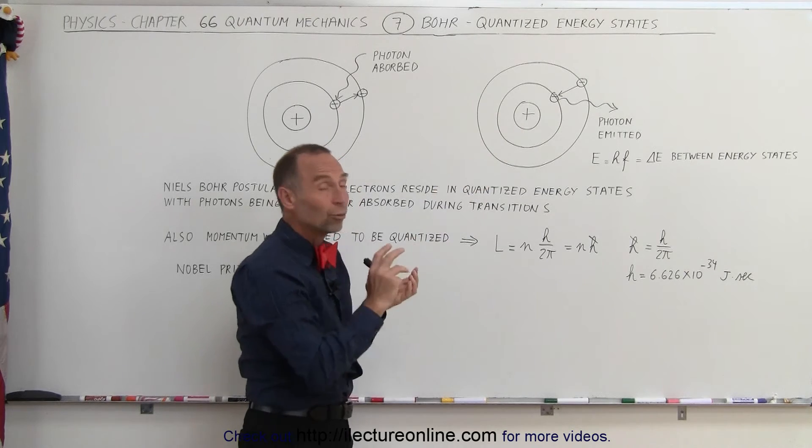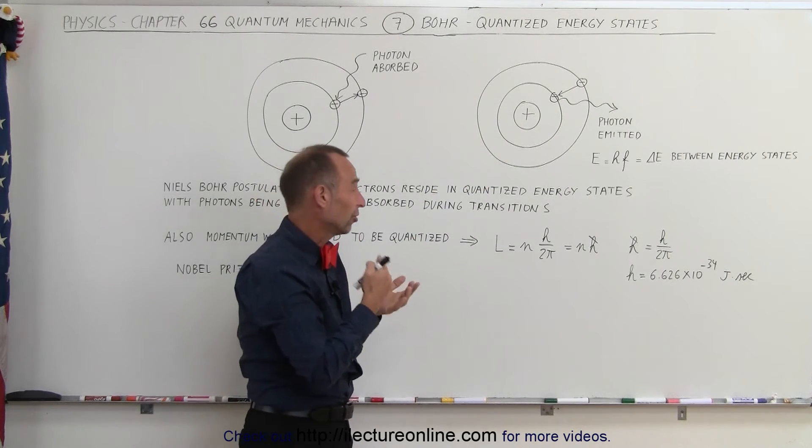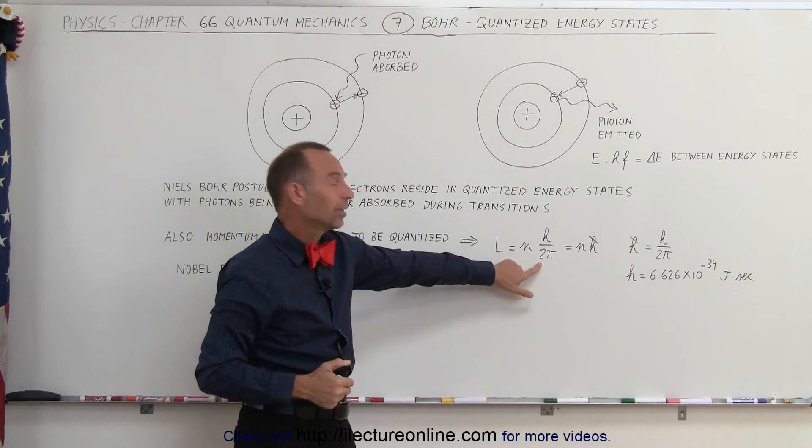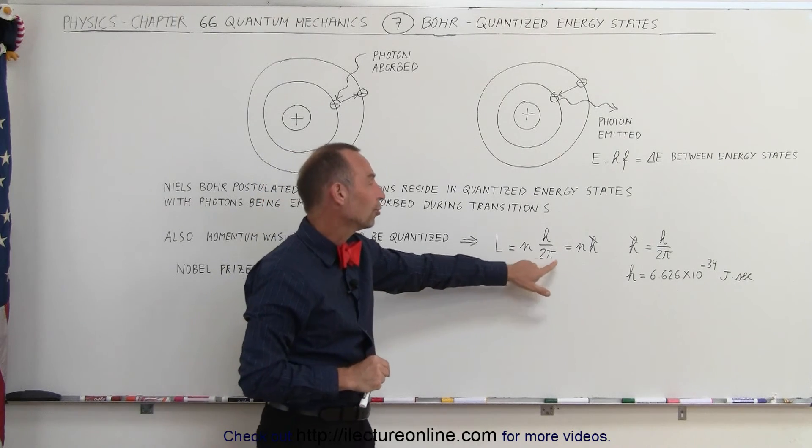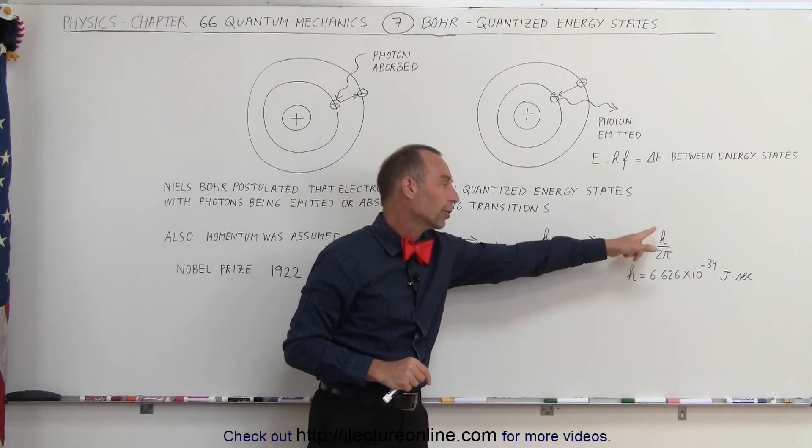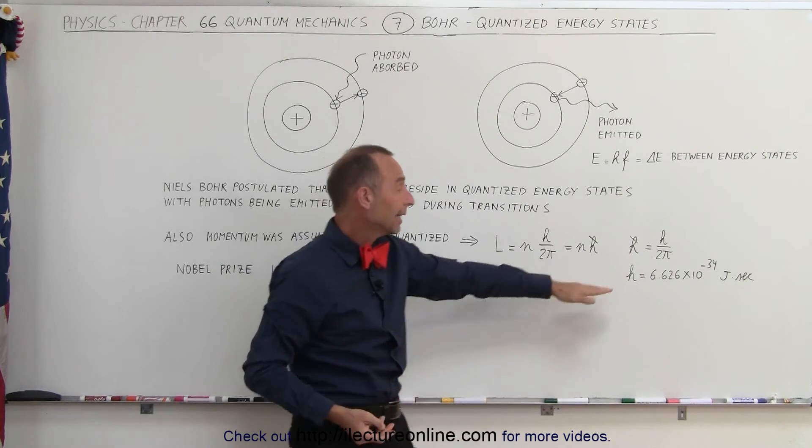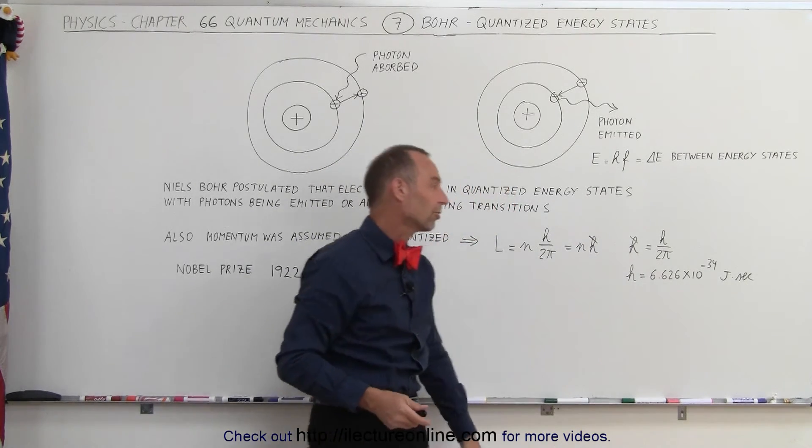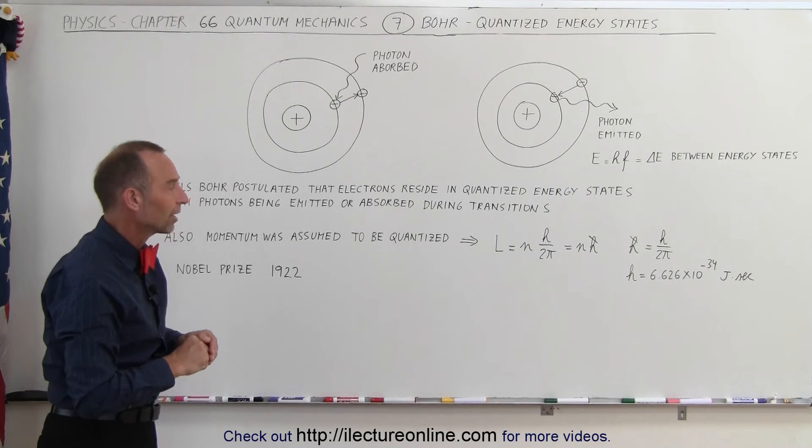So they introduced an additional 2π in the constant, now known as H-bar. H-bar equals H divided by 2π, and H is Planck's constant, 6.626 times 10 to the minus 34 joule-seconds.